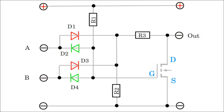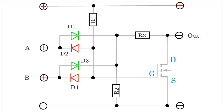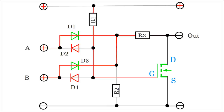If both inputs are low, diode 2 and 4 are forward biased, pulling the gate of the transistor to ground, hence the device is turned off. Diode 1 and 3 are reverse biased, so the drain voltage and the output terminal is pulled to ground via resistor 2 and 3. If both inputs are high, diode 2 and 4 are reverse biased, hence the gate voltage of the transistor is pulled to nearly the supply voltage via resistor 1, hence the device is turned on. The resulting drain voltage and so the potential at the output terminal is 0V.